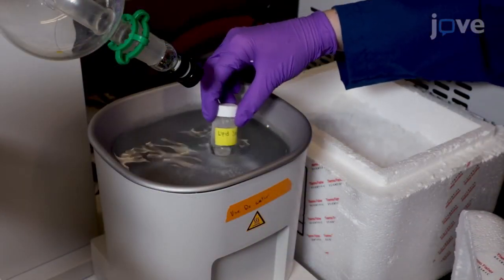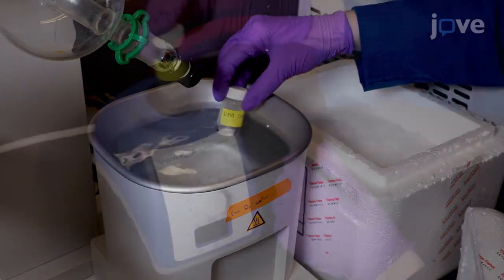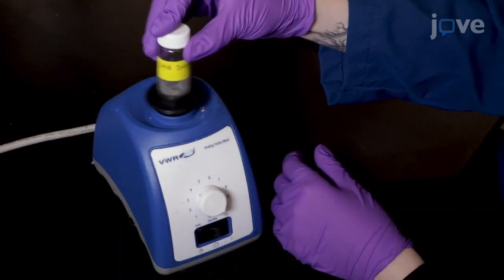thaw the suspension in a 30 to 40 degrees celsius water bath. Vortex the thawed vesicle suspension.